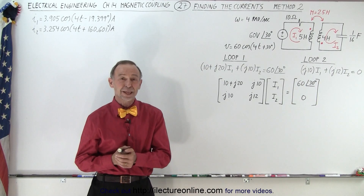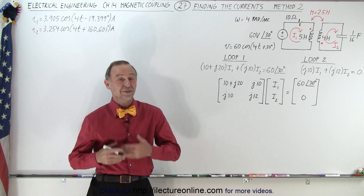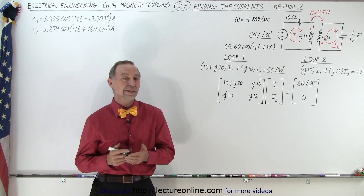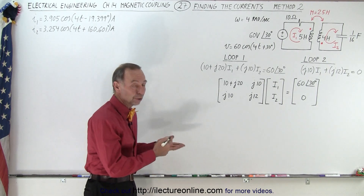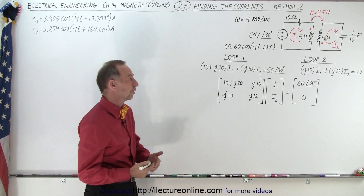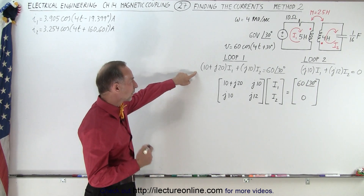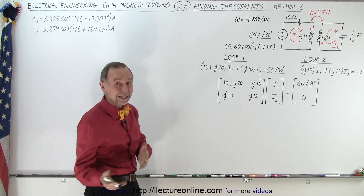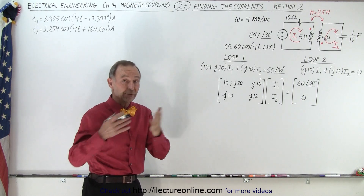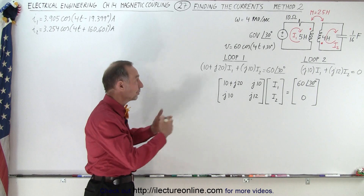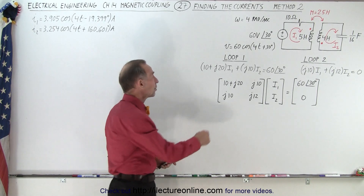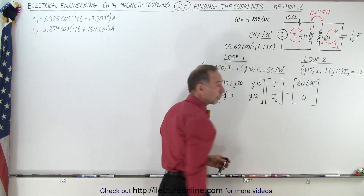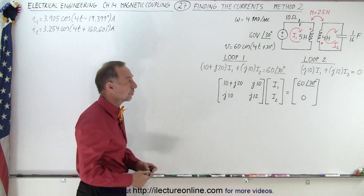Welcome to our lecture online. Here we're solving the same problem that we did on the previous video, but with a different method. Here we're going to use the method of determinants to find the currents. I've already written down the KVL from loop 1 and loop 2 that we did in the previous video, and we end up with these two equations in terms of I1 and I2 — that's what we're trying to solve for.